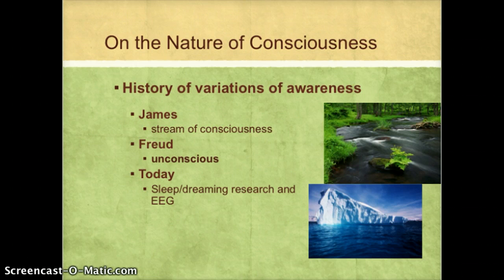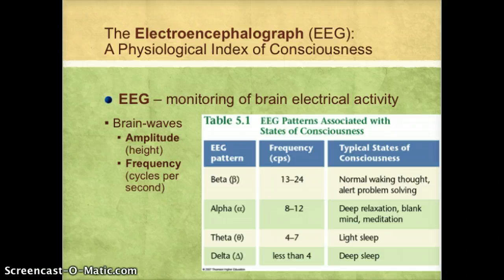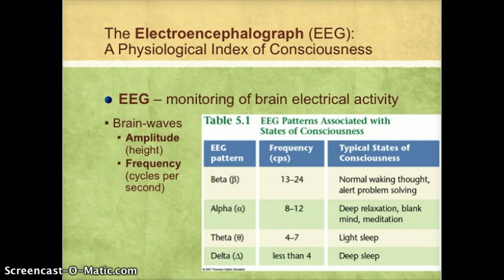Today, we still study consciousness with sleep and dreaming research, using an EEG. EEG stands for electroencephalograph — electro, looking at electricity; cephalo, meaning head; and graph. So we're looking at electrical activity going on inside the head or brain. We can put a sensor on the outside of your skull and it can monitor the electrical activity going on in the brain. When we graph this activity, what we see are waves. We can measure the amplitude or height of the waves, and also the frequency or cycles per second — how often does the wave go up and down.